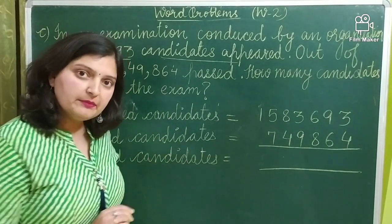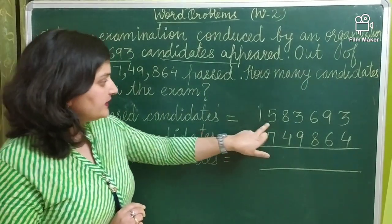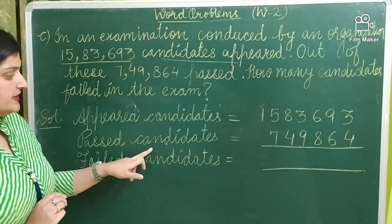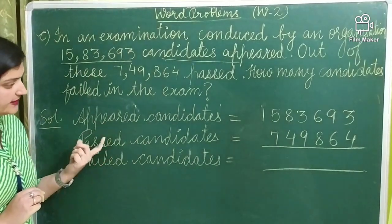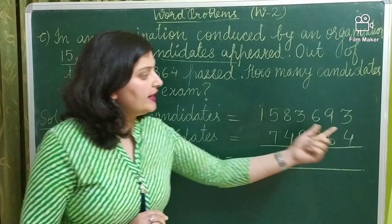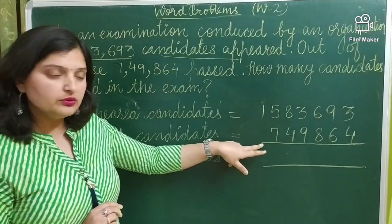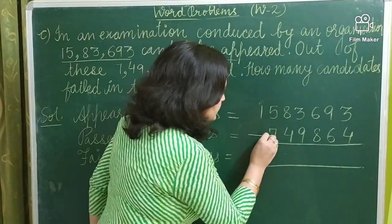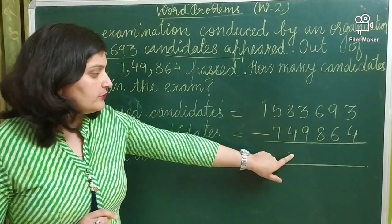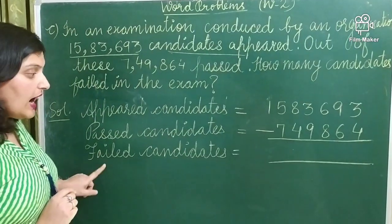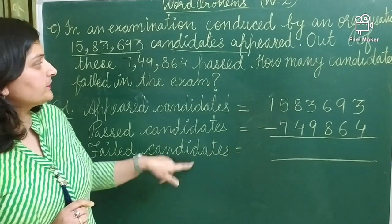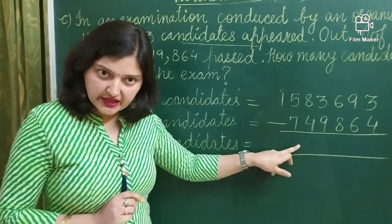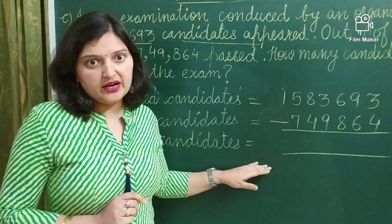So what do we do? We will do our arrangement: appeared candidates minus passed candidates. We arrange the numbers and then we subtract. After subtraction, we will get how many candidates failed in the examination, and that will be your answer.